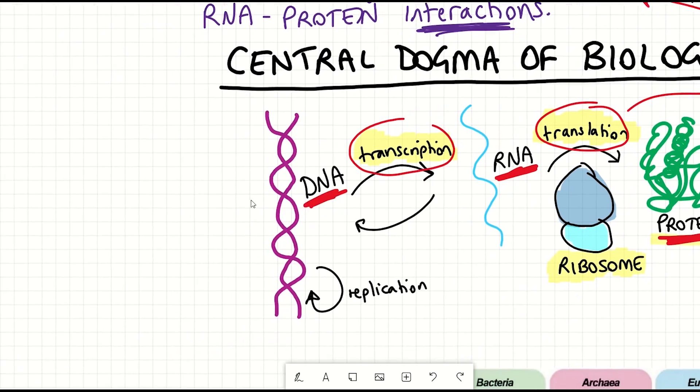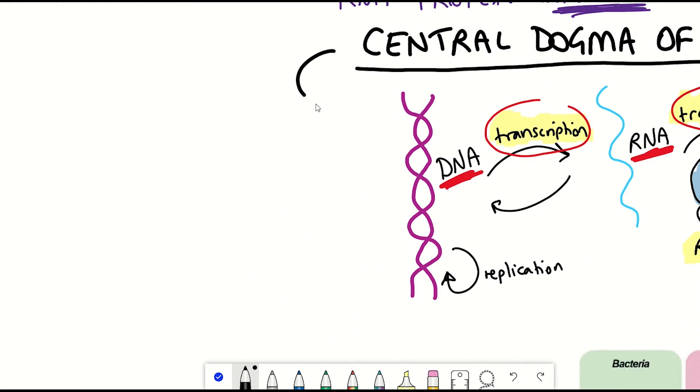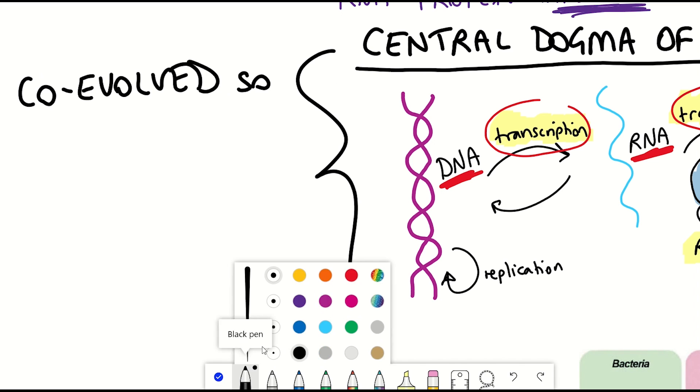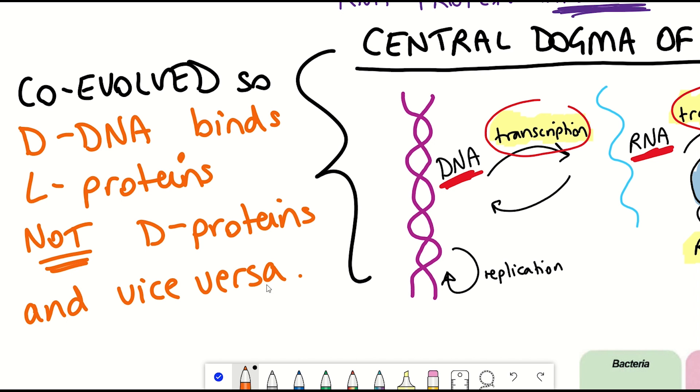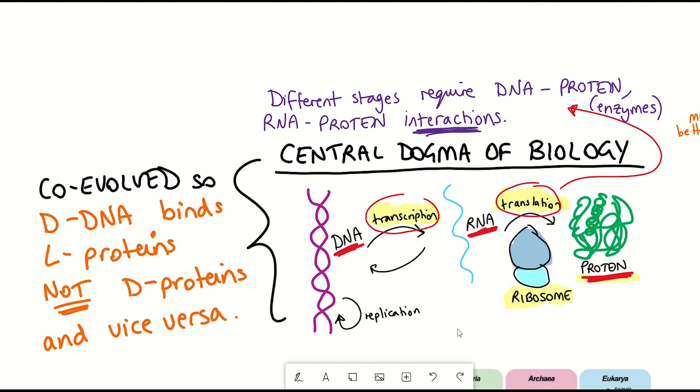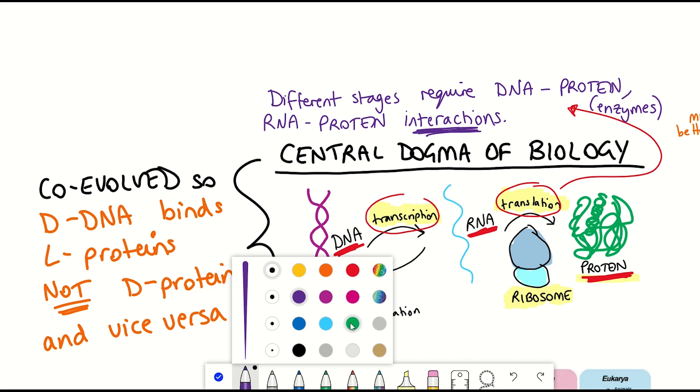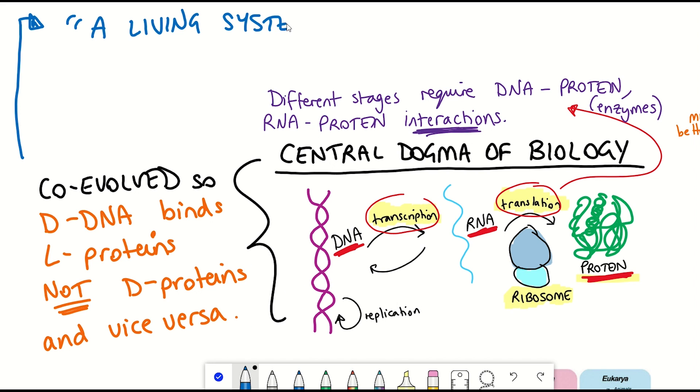And so they have kind of co-evolved together. I mean, the origin of these different molecules is a video on its own, but they've evolved together such that the system wouldn't work if you then had D-proteins instead of L-proteins. And so to summarize that a little bit into a sentence, it would be to say, a living system usually deals with two enantiomers, so the mirror image and the original, of the same compound in drastically different ways.